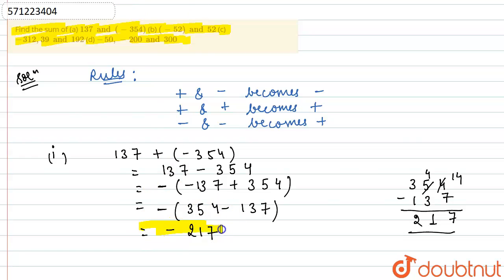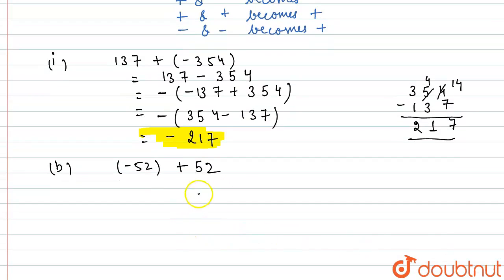So I'm getting this as minus 217. So this is our answer for first part. Now second part B: we need to find the sum of minus 52 and 52, so minus 52 plus 52. We need to find this. So now what I can do is I'll write this as minus 52 plus 52, or I can write this as 52 minus 52, which is obviously equals to zero.